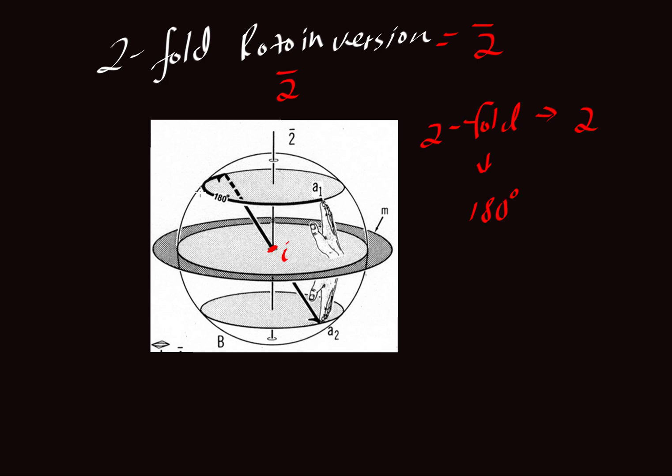It rotates around here 180 degrees. It doesn't show a hand here, and that's appropriate because we're not creating a new motif in that location. We're going to invert it through that inversion point and end up with another hand, A2, down here.